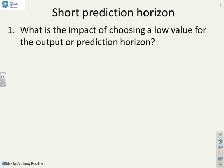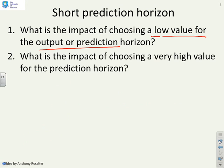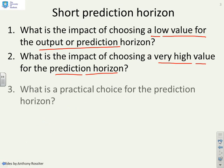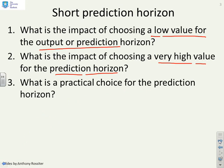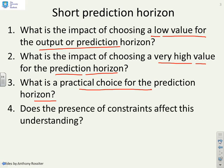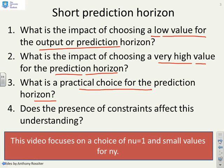Short prediction horizons then: what's the impact of choosing a low value for the output or prediction horizon? What's the impact of choosing a very high value for the prediction horizon? And that actually comes in the next video. Where we're going is what therefore is a practical choice for the prediction horizon. Does the presence of constraints affect this understanding? That will be dealt with in a later chapter. In this particular video, we're going to focus mainly on using nu equals 1 with small values of ny.